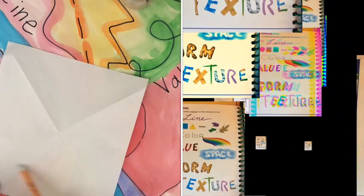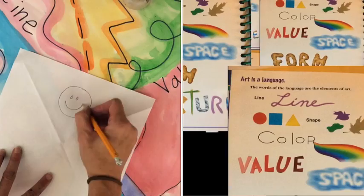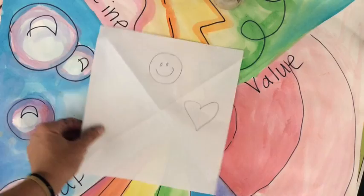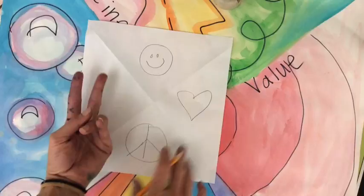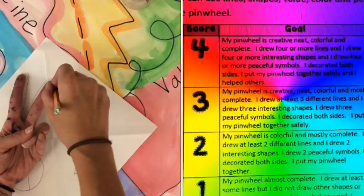Now on the back I am going to draw at least four symbols of peace. So I could draw something that reminds me of peace as a happy face, a heart. These are all symbols of peace, a peace sign. And even a hand like this, holding the fingers out, that's a symbol of peace.